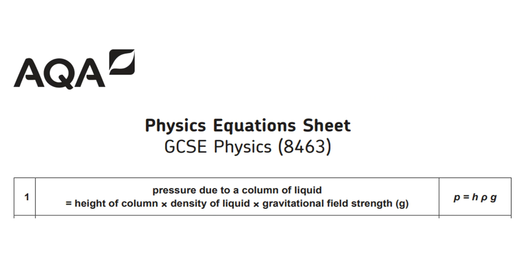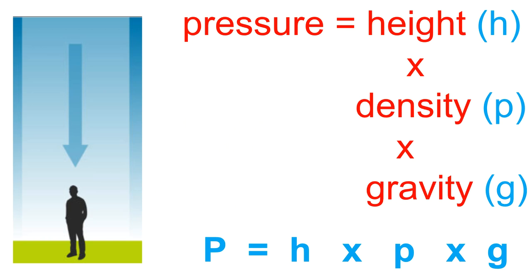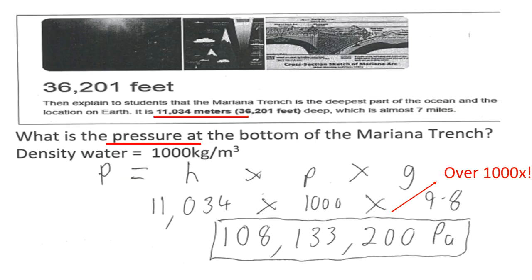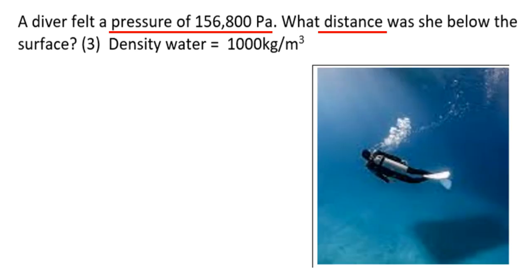The equation for pressure in a liquid is: pressure = height × density × gravitational field strength (P = hρg). The higher the column of liquid, the denser the liquid, and the stronger the gravitational field — the greater the pressure. The pressure at the bottom of the Mariana Trench: P = 11,034 × 1,000 × 9.8 = 108 million pascals.